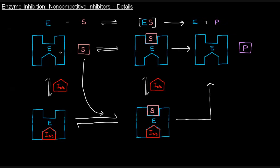Now, where does a non-competitive inhibitor come into play? A non-competitive inhibitor is going to bind at a site other than the active site. The substrate binds at the active site — square shape, square active site here that I've drawn for simplicity — but this house-shaped sort of site is for this non-competitive inhibitor. You'll notice here that the free enzyme and the enzyme-substrate complex can both get a non-competitive inhibitor attached to them.